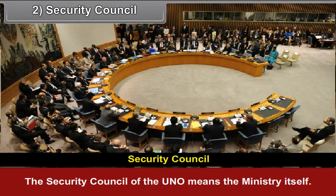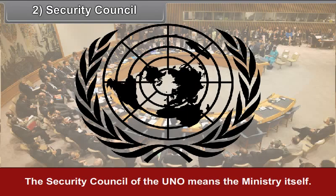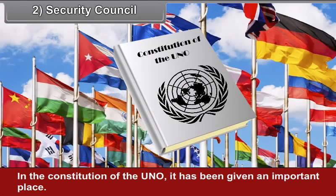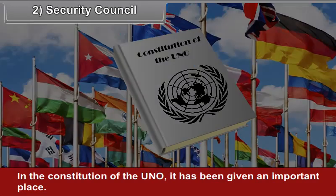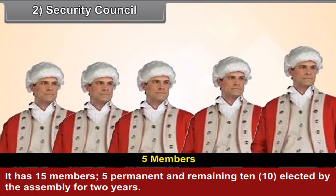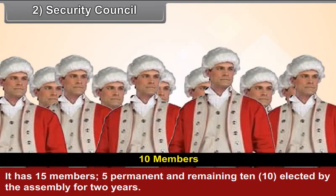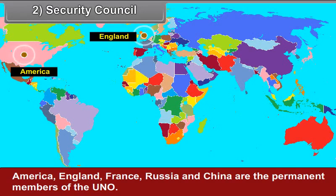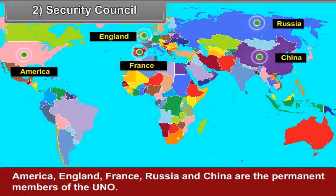Second, Security Council. The Security Council of the UNO means the Ministry itself. In the Constitution of the UNO, it has been given an important place. It has 15 members — 5 permanent and the remaining 10 elected by the Assembly for two years. America, England, France, Russia, and China are the permanent members of the UNO.